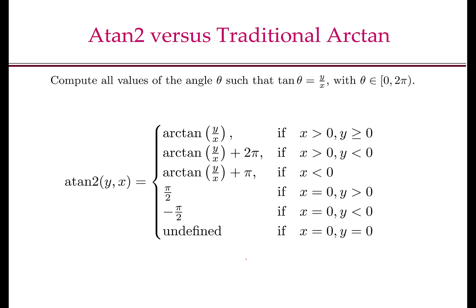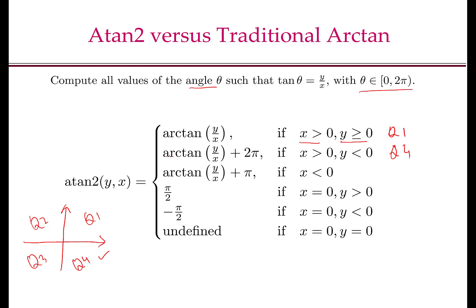So let's look at a general problem. We want to compute the values of the angle theta such that tan theta equals to y by x, and theta lies between 0 and 2 pi. atan2(y, x) is defined as simply arc tan of y by x if both x and y are positive. So what you have to do is look where this point x comma y lies. Let us create these four quadrants: x positive y positive is Q1, Q2, Q3, and Q4. If the point x comma y lies in the first quadrant, that is x is positive and y is positive, then you just do arc tan of y by x. If x is positive and y is negative, that is you are in quadrant Q4, then you have to add 2 pi to arc tan y by x.